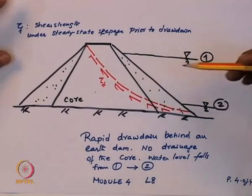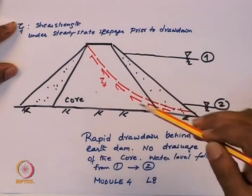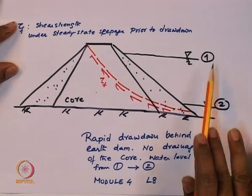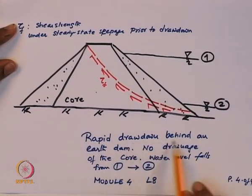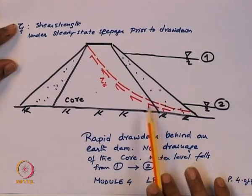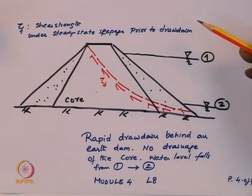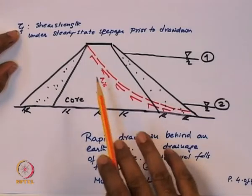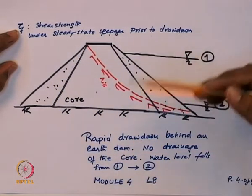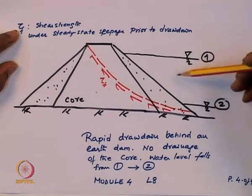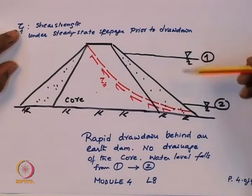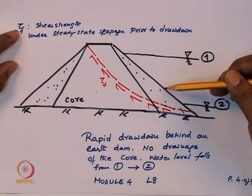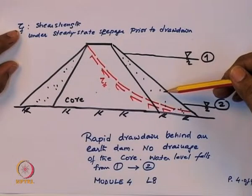Another CU test example is rapid drawdown of an earth dam, where the water level drops suddenly. Prior to drawdown, the soil in the core has consolidated under steady-state seepage. During rapid drawdown, no drainage occurs, so the shear strength at failure is the undrained strength under the pre-drawdown effective stress state. This is a classic application of consolidated undrained triaxial test parameters.